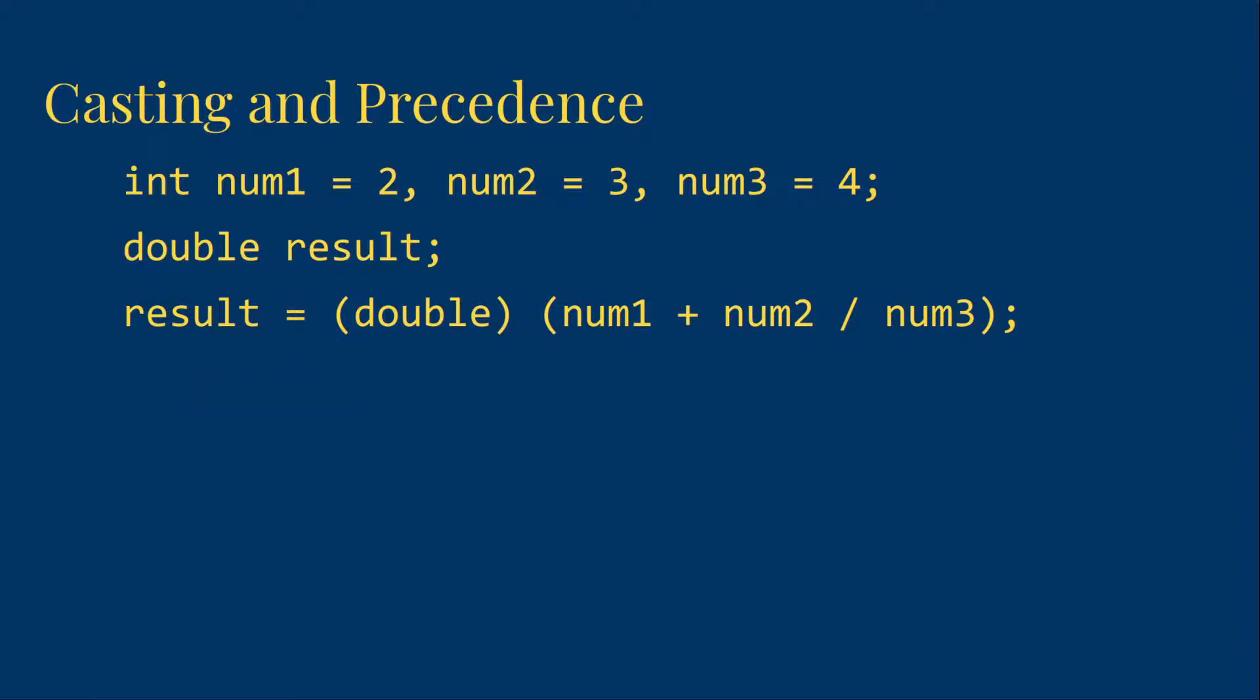Now, one way people will try to fix this is to use parentheses. But the problem is we've really just said do the whole calculation, then convert it to a double here. That's going to convert to a double right before we assign it into the double. But all of the actual calculation, both the division and the addition, are done on integers. And so we end up with 2.0 again.